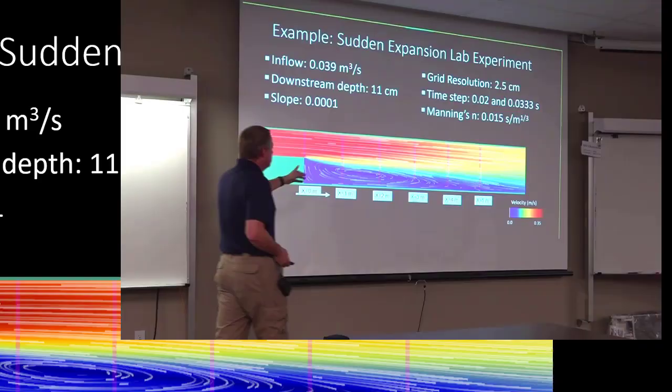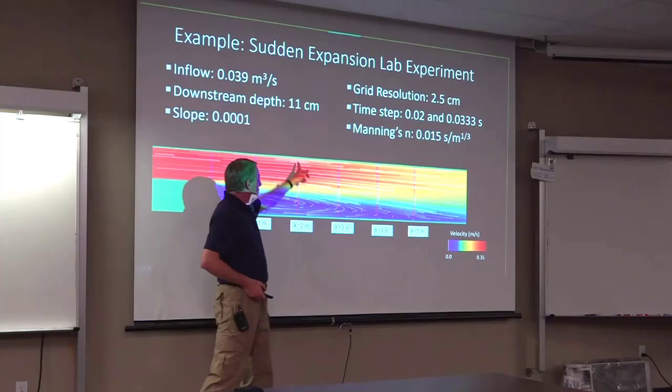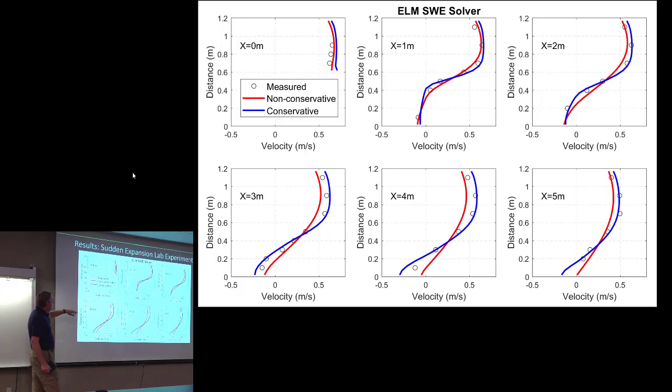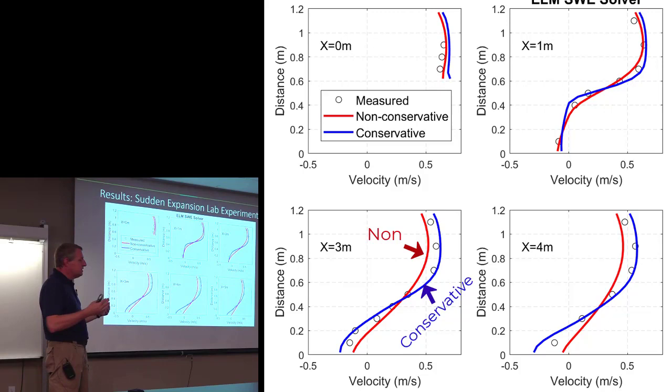This was a flume experiment where they had good longitudinal velocity distributions. And so you can see that what we've got are the observed velocity distributions at various locations with the non-conservative and the conservative. And the conservative is capturing the lateral velocity distribution really much better.